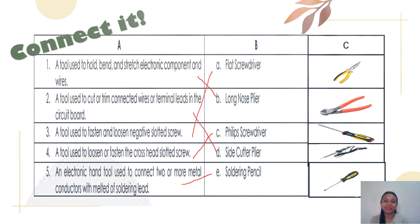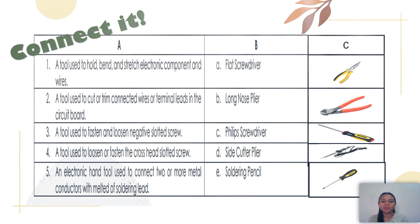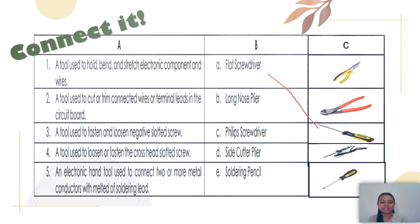Did you get them all correctly? I am proud of you! Now let us connect Column B to Column C. The flathead screwdriver — here it is. Next, long nose plier — this is the long nose plier. Phillips screwdriver, side cutter plier, and the soldering pencil. Nice try!